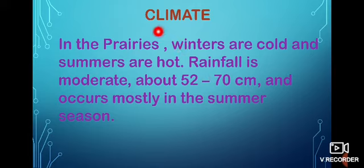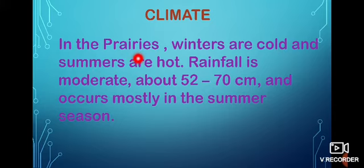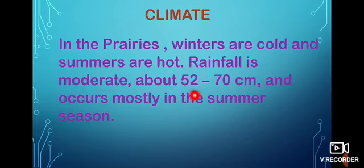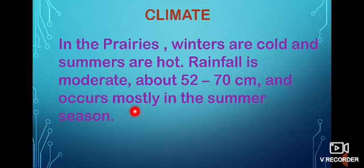We are going to learn about the climate in this region. In the prairies, winters are cold and summers are hot. The rainfall is moderate — average about 52 to 70 centimetres — and occurs mostly in the summer season.